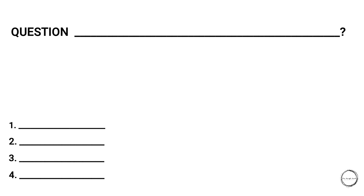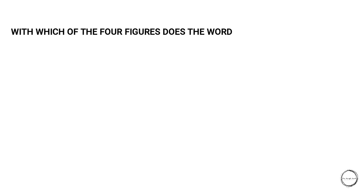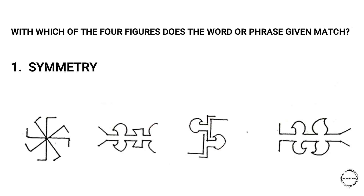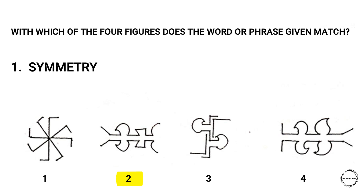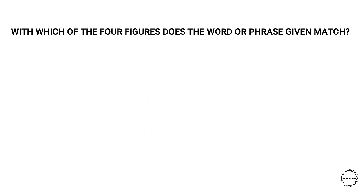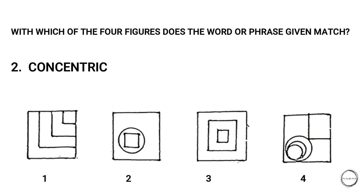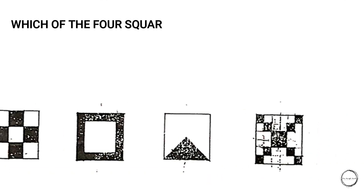The drill remains the same: I'll mention the question and four options and also mark the answers. Let's start. Here's the first question: with which of the four figures does the word or phrase given match? The word is 'symmetry,' and the answer is option two, which is symmetrical.